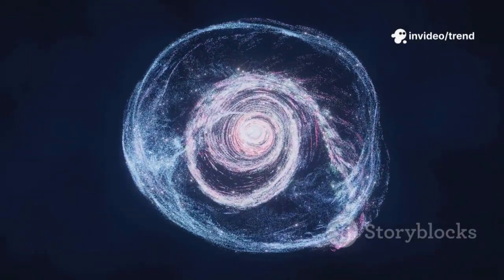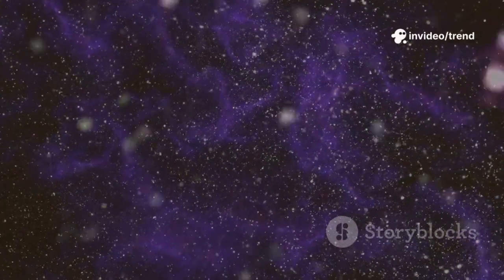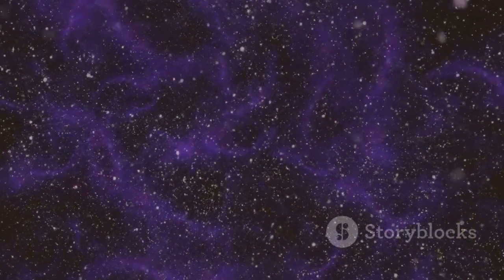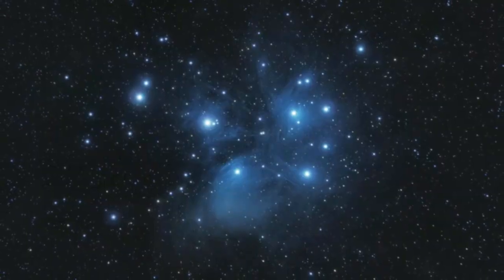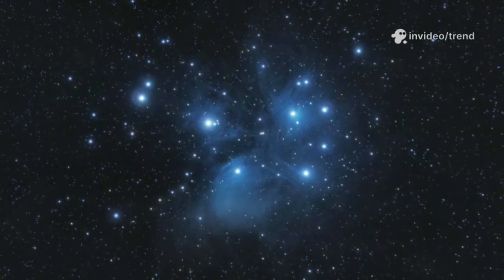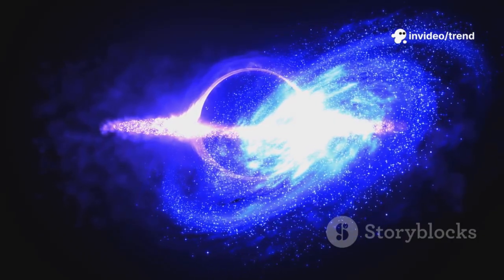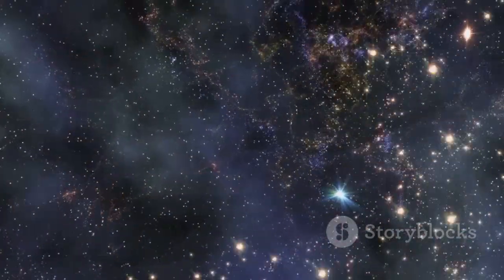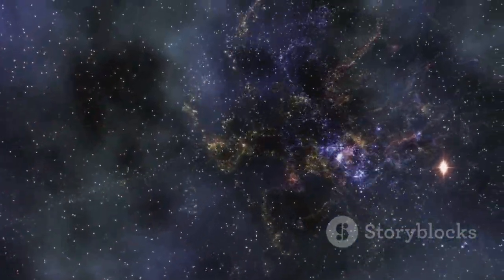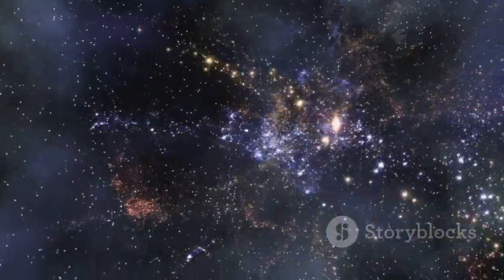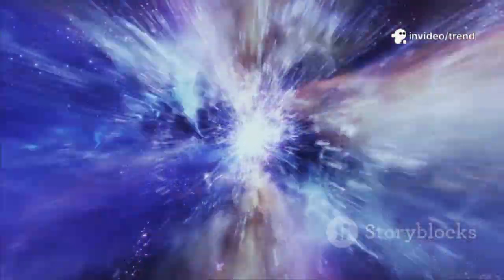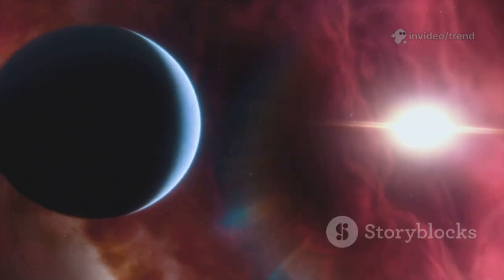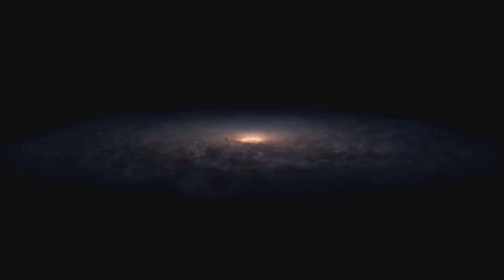This process, called reionization, was thought to take a billion years, yet here it's happening much sooner. How? Maybe this galaxy hosted exotic massive Population III stars or an early supermassive black hole blasting out energy. Either way, it's a landmark discovery. This single observation raises profound questions about the power and nature of the first galaxies. The early universe was more transparent and more dynamic than we thought. Webb is revealing surprises at every turn. The rules of cosmic dawn are being rewritten.